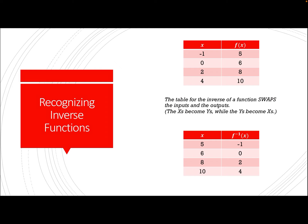If you have a table of values, the way you can recognize that the functions are inverses is that all of the input values for the original function are the output values for the inverse function. We have our inputs, the x values, and our outputs, the y values. Notice that all of the inputs become the outputs for the inverse function and all of the outputs become the inputs. So the columns just flip around.